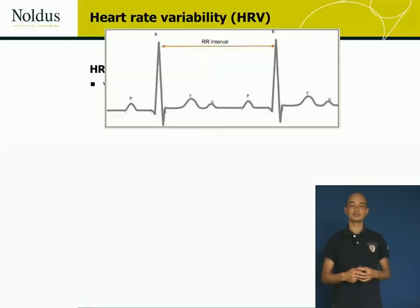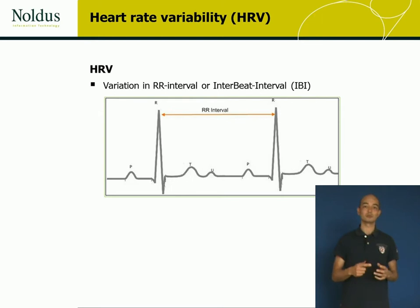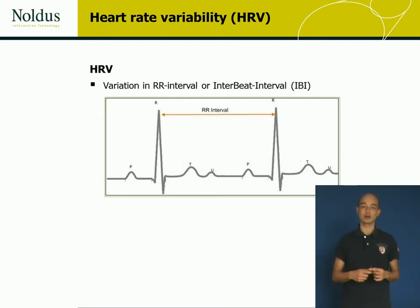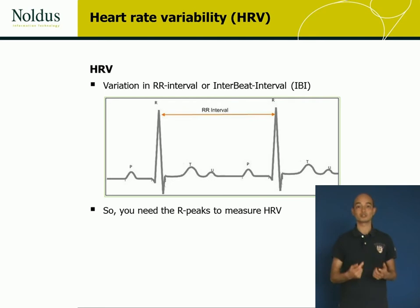Heart rate variability is the variation in heart period, or interbeat interval. This is the time between two successive heartbeats in the electrocardiogram, or ECG. So, in order to be able to measure heart rate variability, you need to measure the ECG.